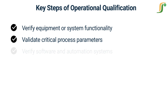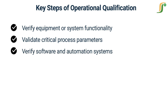Step three: Verify software and automation systems. If the equipment or system being qualified involves software or automation systems, OQ includes verifying and validating the software to ensure that it is installed correctly, functioning as intended, and meets predefined specifications. This may involve testing software functionality, data integrity, security features, and other relevant parameters.